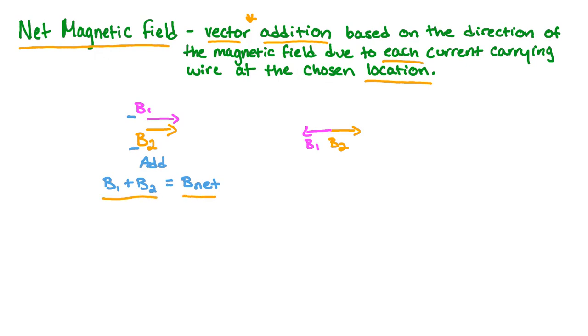If, however, our magnetic fields point in opposite directions, then we must subtract their magnitudes. B1 minus B2 will be equal to the net magnetic field.